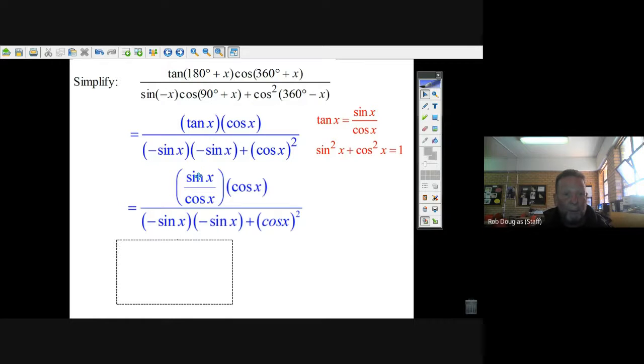But the tan x we replace with sine x over cos x. Hey, I'm going to see those cos x's are going to cancel. On the bottom, I'm going to have sine squared plus cos squared.